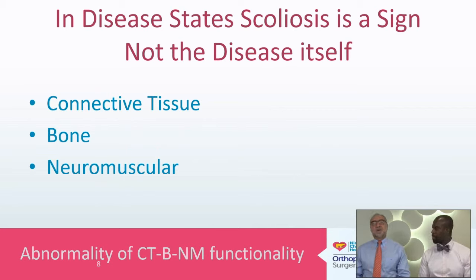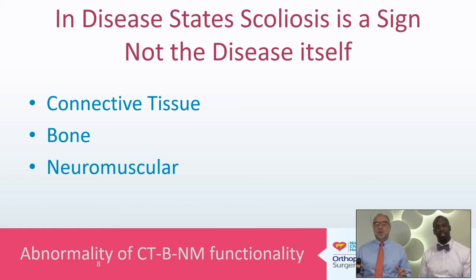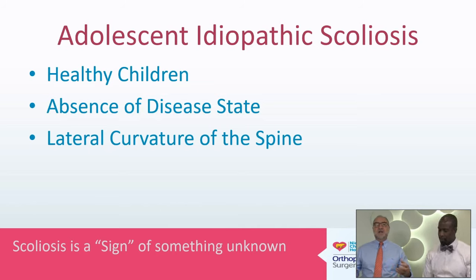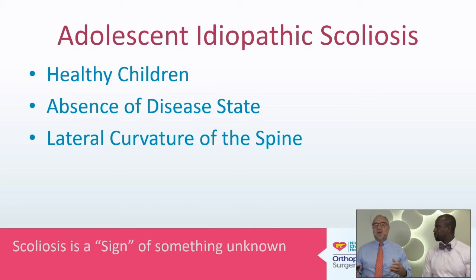In idiopathic scoliosis with these healthy young children, scoliosis is just a sign that there's some deviation from normal — not a true disease, but an abnormality of either the soft tissues, the bone, or perhaps the neuromuscular controlling factors as the spine is growing. These healthy children don't have a disease and they show up with an asymmetry of their spine in the pediatrician's office. It's just a sign of something unknown in their genes that gives them a slight deviation of either their soft tissues, their bones, or the neuromuscular elements, or perhaps a slight variation in all three.